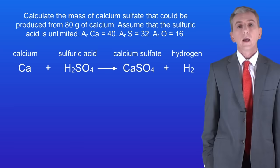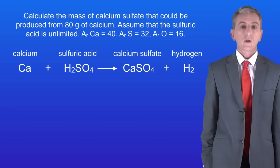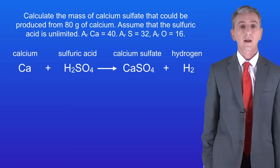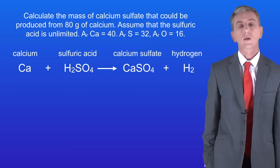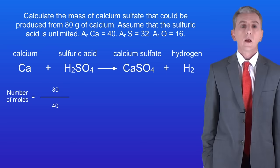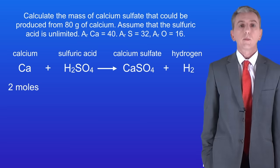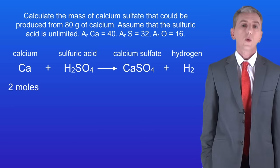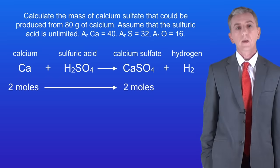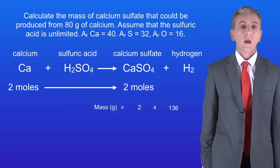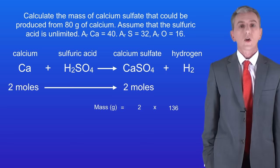Here's one for you to try. Calculate the mass of calcium sulfate that could be produced from 80 grams of calcium. Assume that the sulfuric acid is unlimited. Pause the video and try this yourself. We start by calculating the number of moles of calcium: the number of moles is the mass divided by the relative atomic mass. The relative atomic mass of calcium is 40, so we've got 2 moles of calcium. There are no big numbers in the equation, so 1 mole of calcium could produce 1 mole of calcium sulfate, meaning 2 moles of calcium produces 2 moles of calcium sulfate. We calculate the mass by multiplying the number of moles by the relative formula mass. The relative formula mass of calcium sulfate is 136, giving us a mass of 272 grams — and that's our final answer.